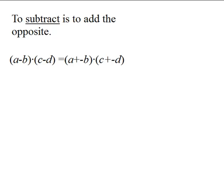a plus negative b times c plus negative d. Then you distribute in the usual way. a times c, a times negative d, negative b times c, and negative b times negative d.